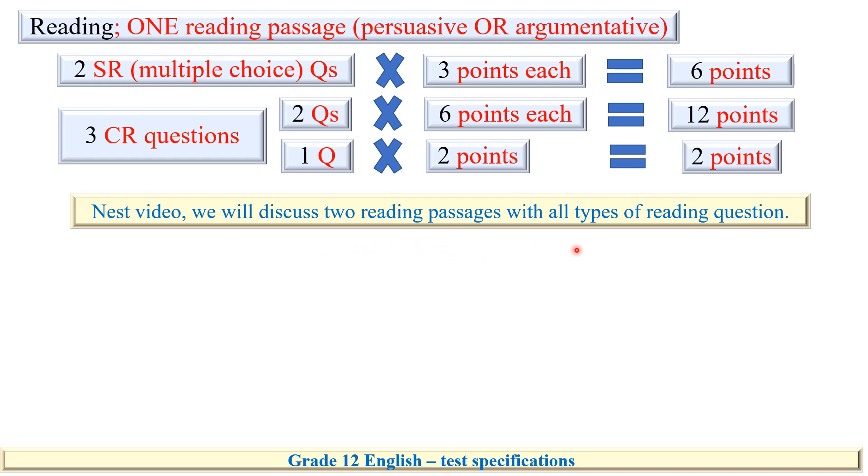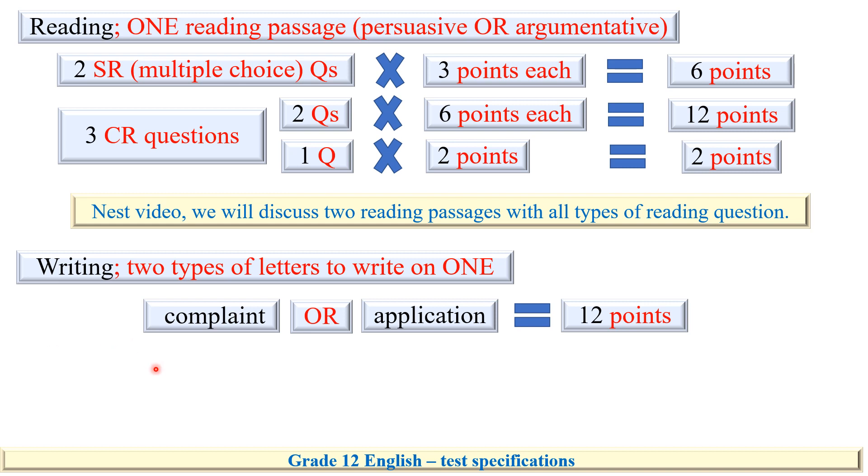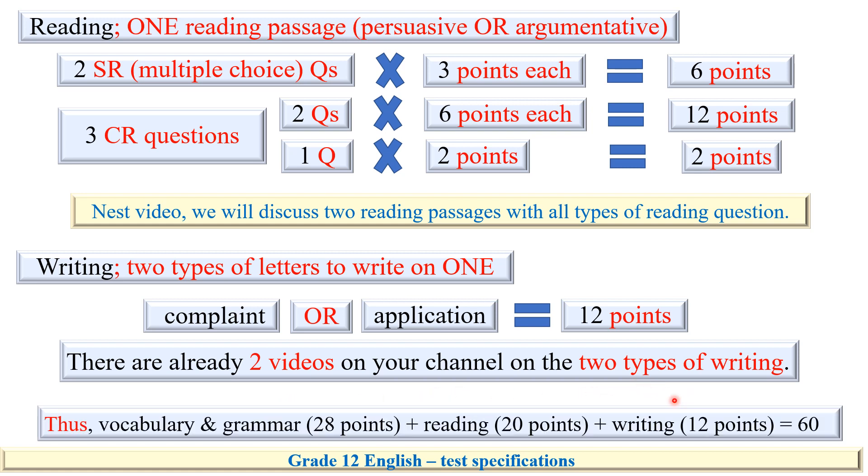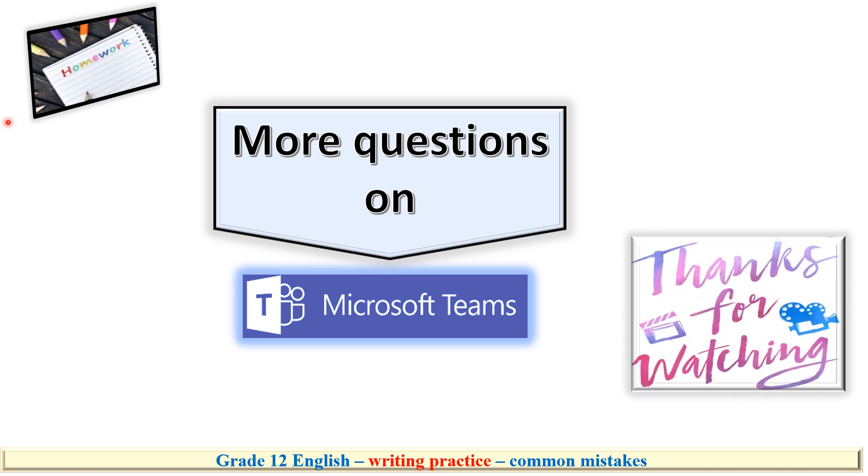As for the writing, you will be given two letters to choose only one, either a letter of complaint or application for 12 points. And you already have two videos on your channel on the two types of writing. You will find more questions on Microsoft Teams, and thank you so much for watching this video.